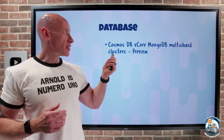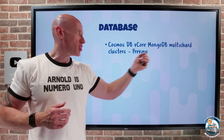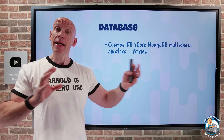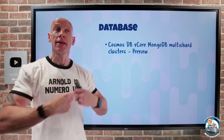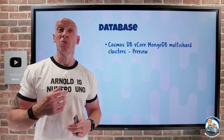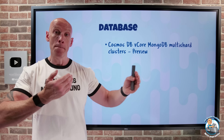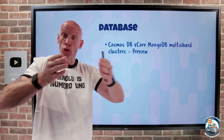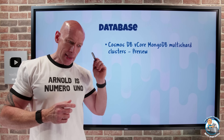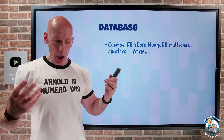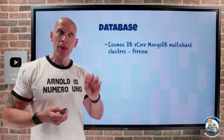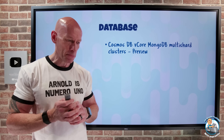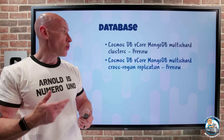Cosmos DB vCore MongoDB multi-shard clusters are in preview. Sharding is where we break up the database into shards — parts that can be distributed over multiple servers. The big deal is it lets you have bigger databases and higher performance because you're distributing data and queries over those instances. You can have up to five shards, and every shard has the same configuration — the same number of vCores, same memory, same storage and IOPS capacity.